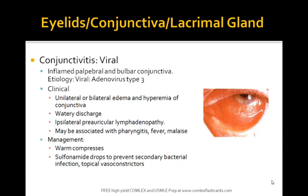This is a very high yield topic and it's important to group the different conjunctivitis types — whether viral or bacterial — in terms of the day of appearance once the disease has started. In viral conjunctivitis, there is mainly an inflamed palpable bulbar conjunctiva. It's due to adenovirus type 3.